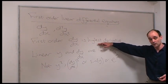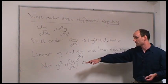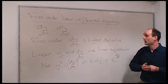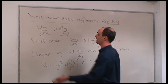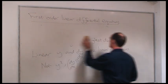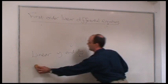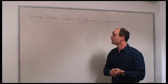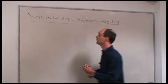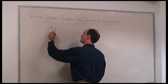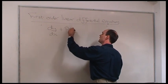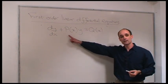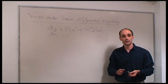So, dy by dx is the highest derivative — that means it's first-order — and nothing like y squared or (dy/dx) cubed, because that would make it a nonlinear equation. Taking all that, the most general expression for a first-order linear differential equation is dy by dx plus p(x)y equals q(x), where p(x) is some general function of x and q(x) is a function of x.